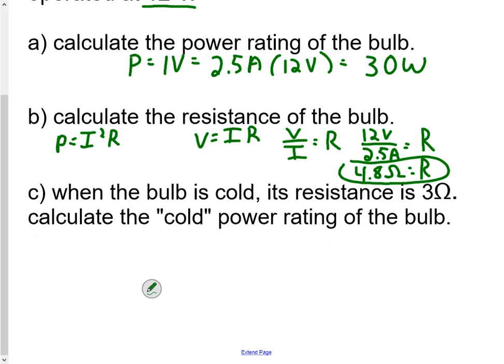Now when the bulb is cold, its resistance is lower, and I'd like you to calculate the power rating of the bulb when it's at this cooler temperature. You remember from before, if the temperature is low, the resistance is low. So that's why it's a little bit less when it's cold.